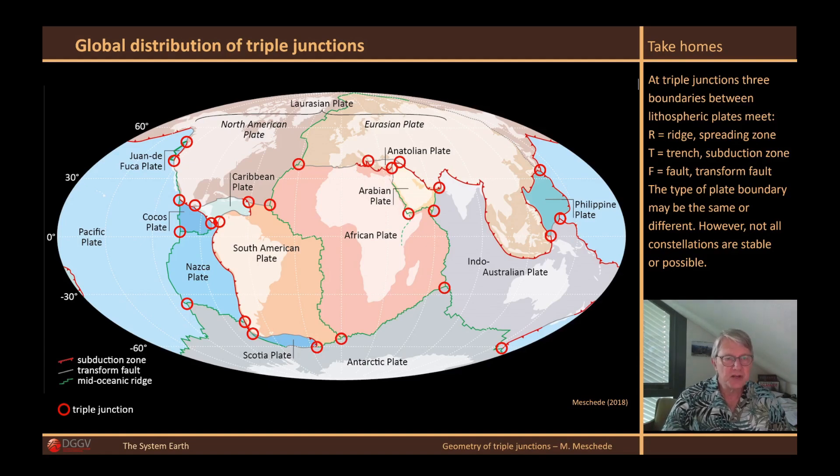As already mentioned, there are no junctions with four meeting plate boundaries, because such a junction, if it were to arise at all, would be converted back into triple junctions immediately after formation due to the dynamic development.